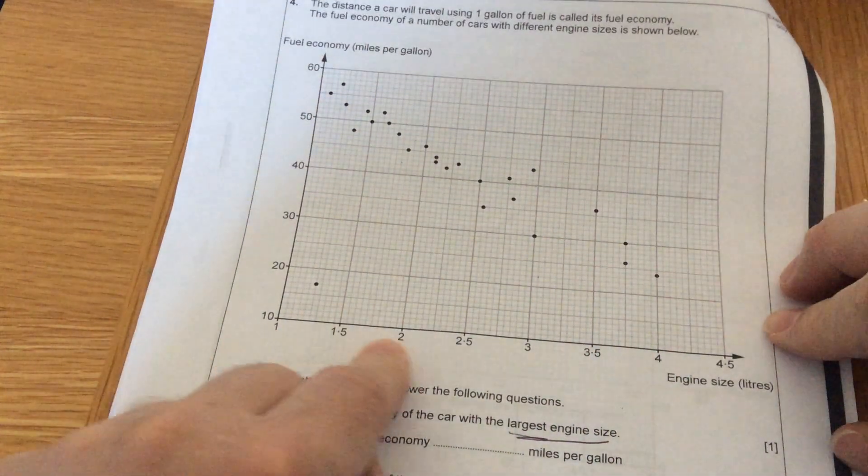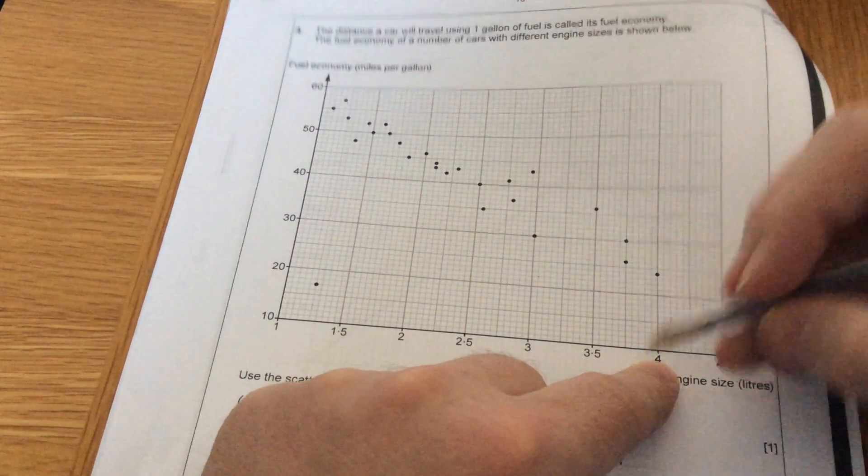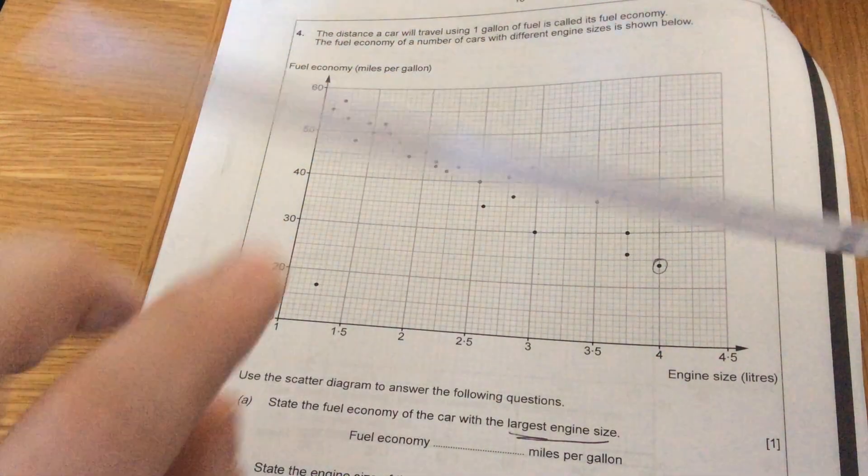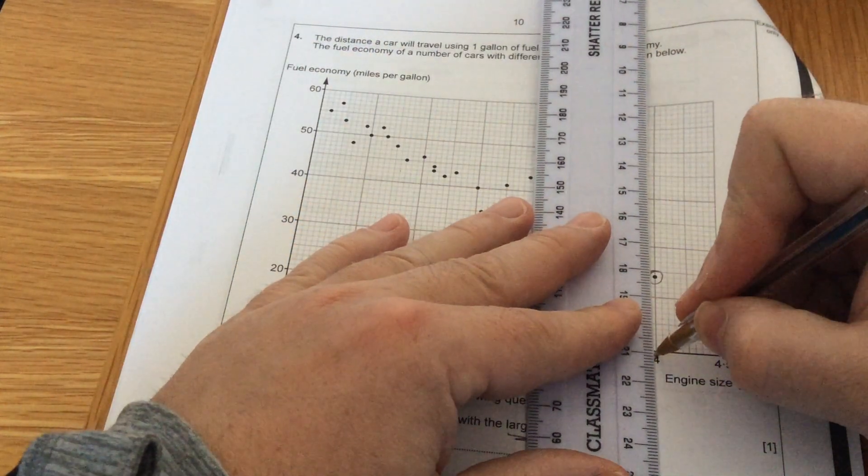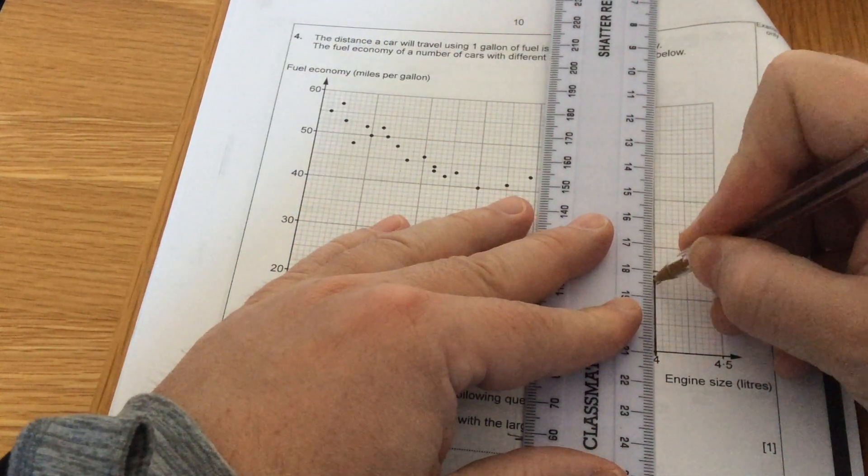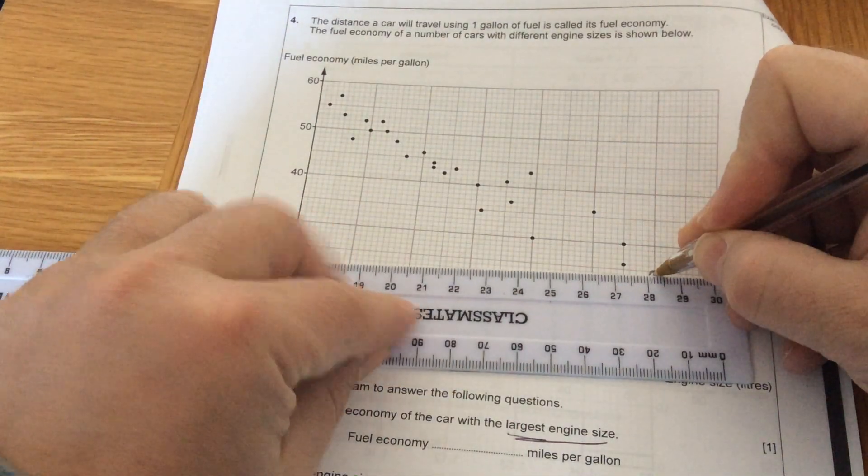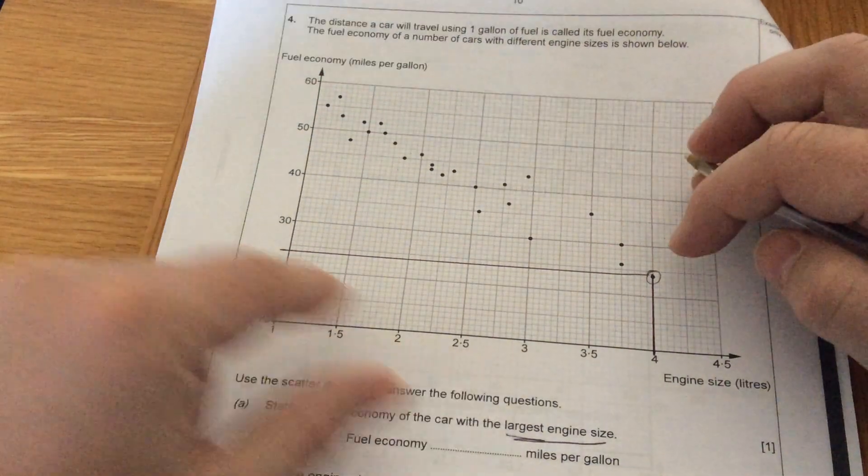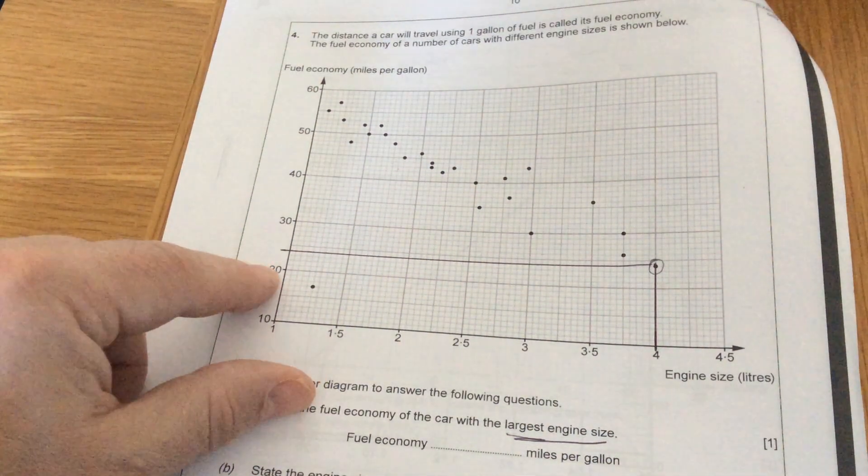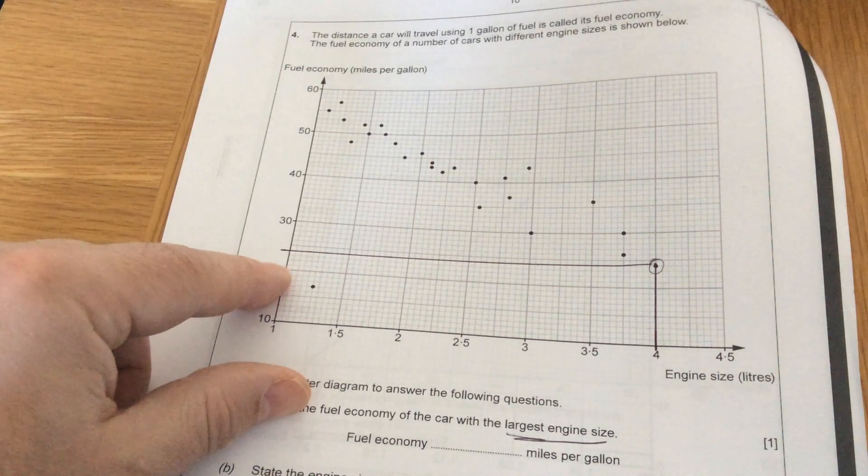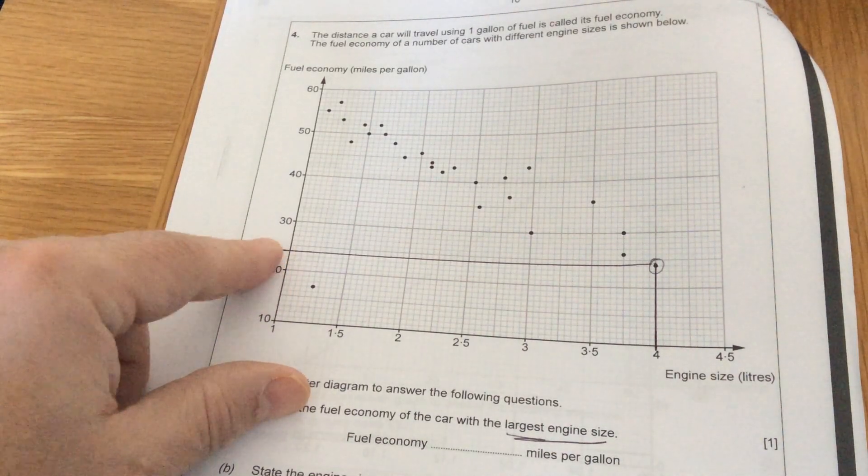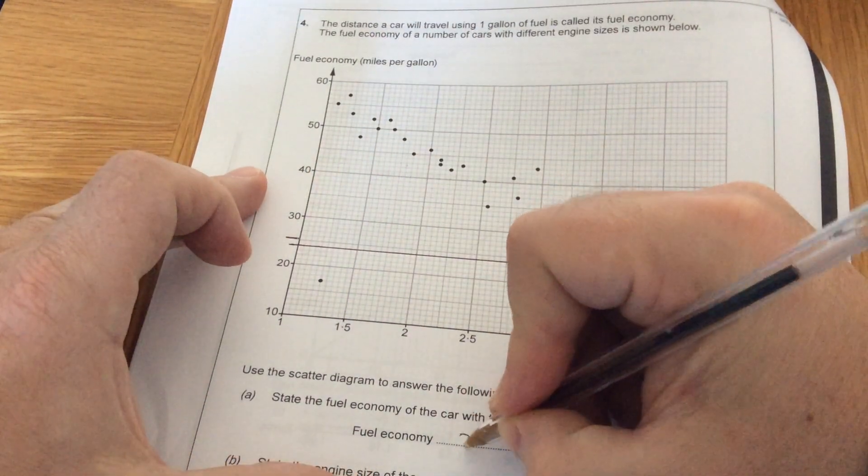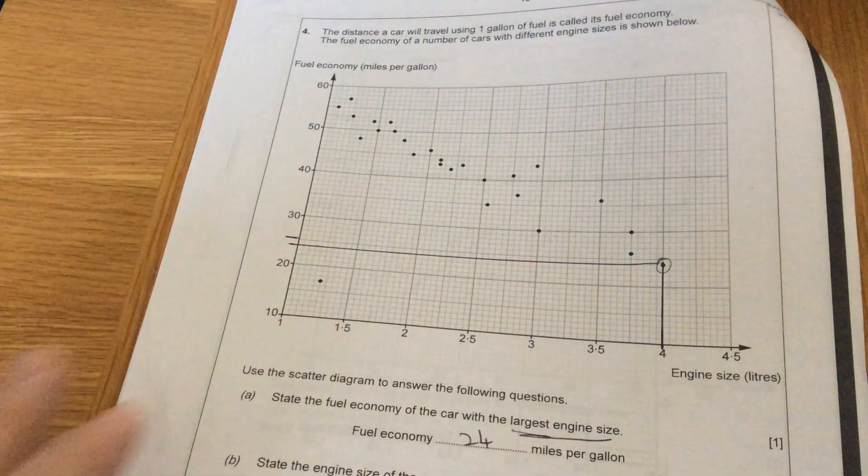So the largest engine is going across. The car with the biggest engine would be this one, which is four litres. And they want the fuel economy. So I would draw a line from four up to my dot and a line straight across. Where that is straight across, you can see it's between 20 and 30. You're going up in ones. So it's 20, 21, 22, 23, 24. So the answer would be 24 because the next one up would be 25. The fuel economy is 24 miles per gallon.